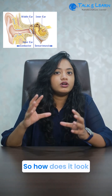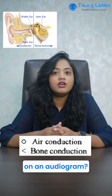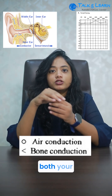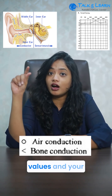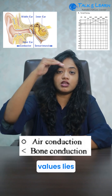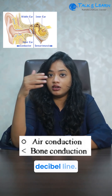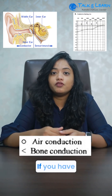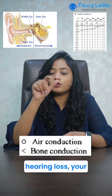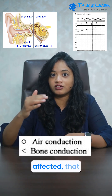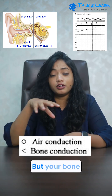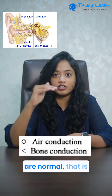So how does it look on an audiogram? For normal hearing, both your air conduction values and your bone conduction values lie above the 20 decibel line. If you have a conductive hearing loss, your air conduction values are affected — that is below 20 decibels — but your bone conduction values are normal, that is above 20 decibels.